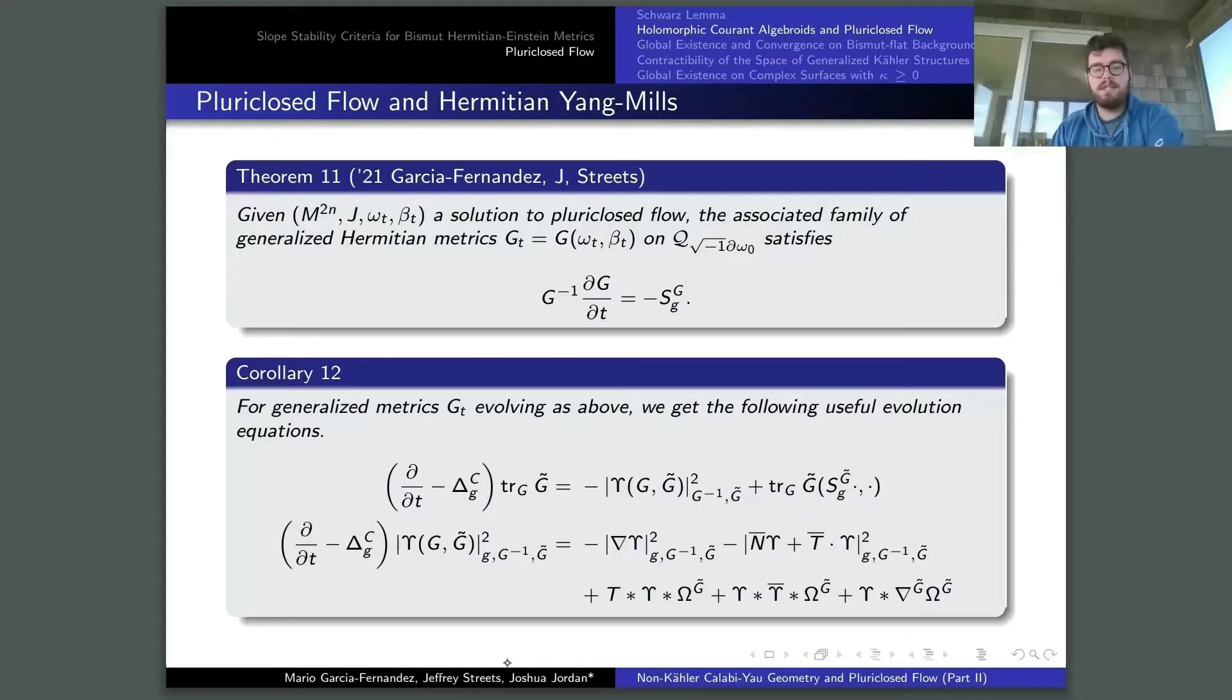If the g tilde churn curvature vanishes, this term vanishes. Something similar can be said down here. This term vanishes, this term vanishes, this term vanishes, and we're just left with these fortunately signed terms. This shouldn't be an n, this should be a nabla. That's my bad. That's a typo. And you get that the heat operator on trace g g tilde and the heat operator on norm epsilon squared, they're signed, which is super convenient for us.